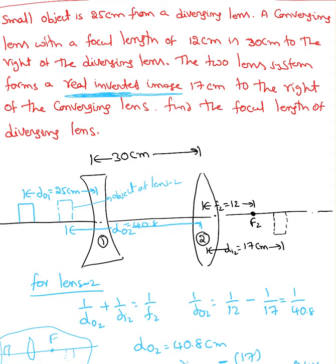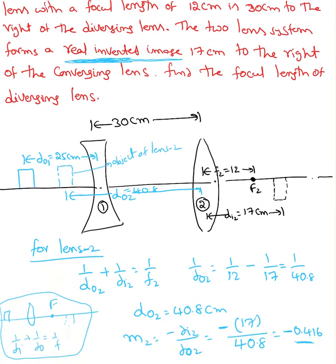Find the focal length of diverging lens. The question is asking about finding the focal length of the first lens. As usual, my object is on the left side of the lens. First one I'm going to take as the first lens, second one as the second lens.